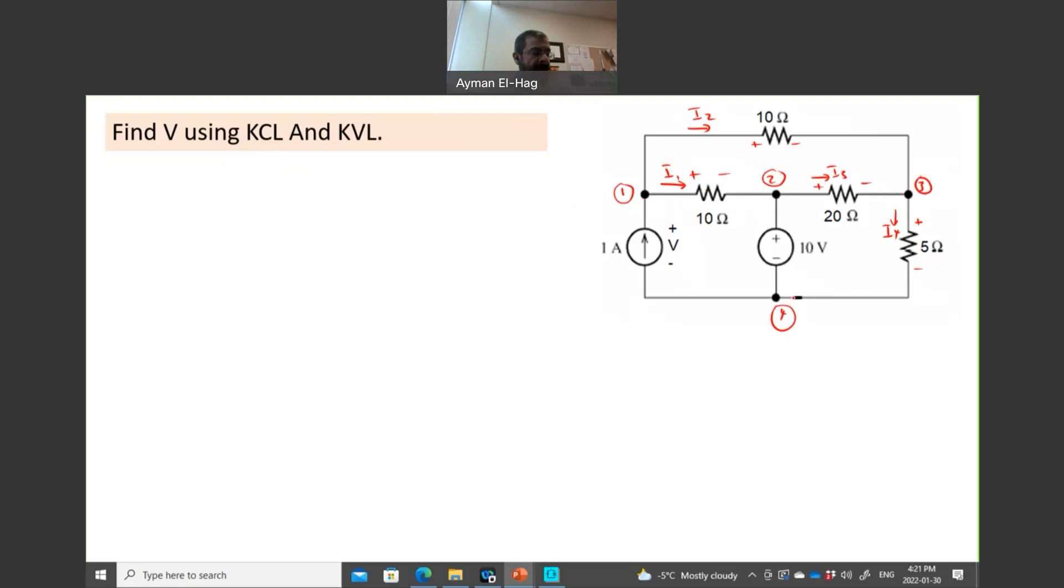Then assign the nodes. We have node number 1, number 2, number 3, and number 4. Now we'll start with the KCL. Remember, do not apply KCL to a node that has a voltage source, why? Because I have to add another current here, so I am adding an equation in expense of another variable. So I'm increasing the size of the problem and there is no need to do that.